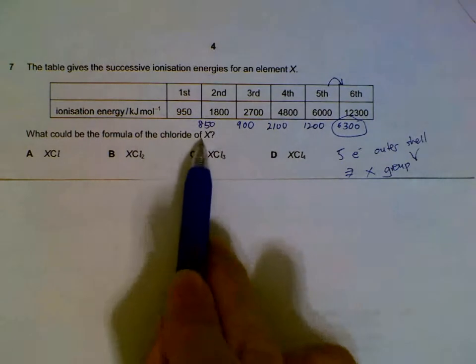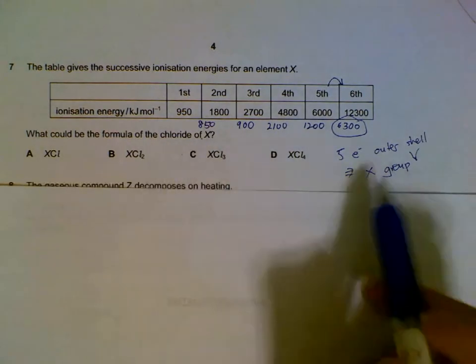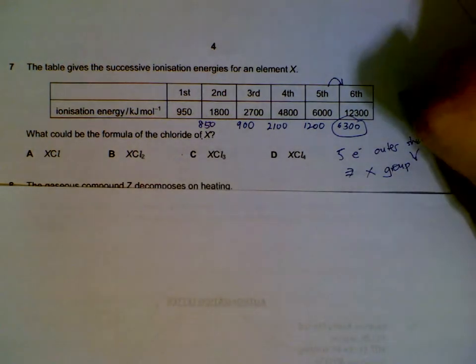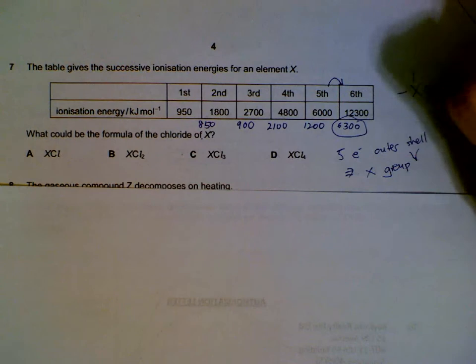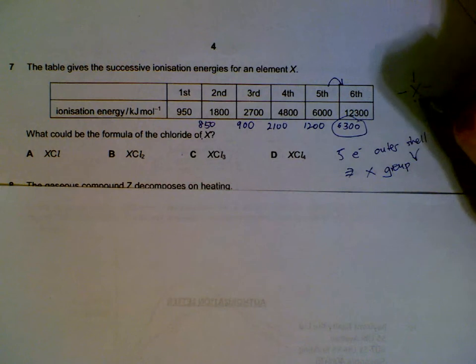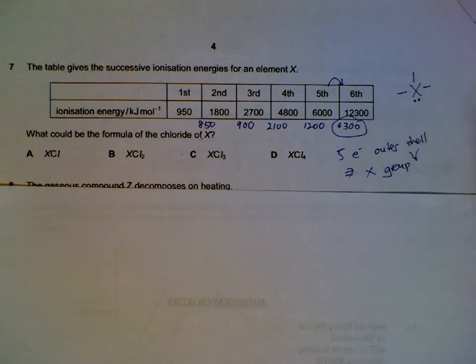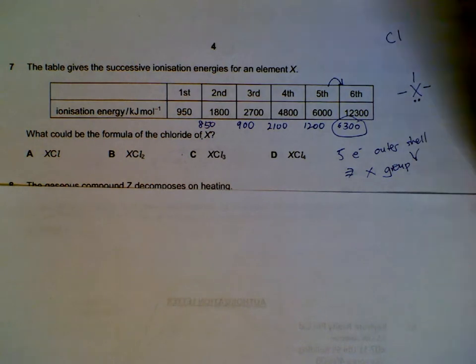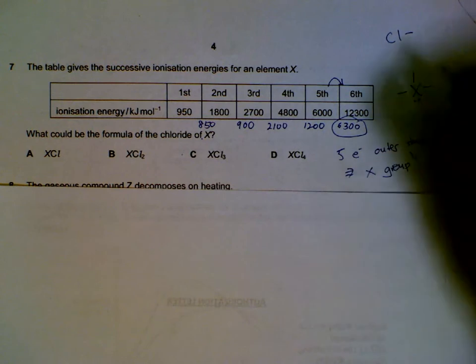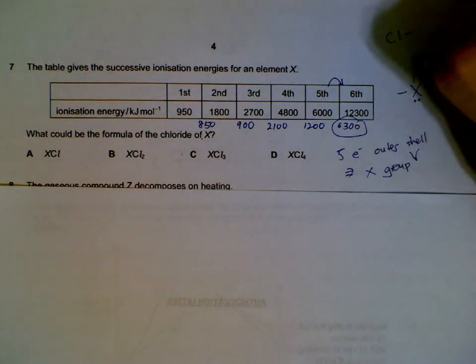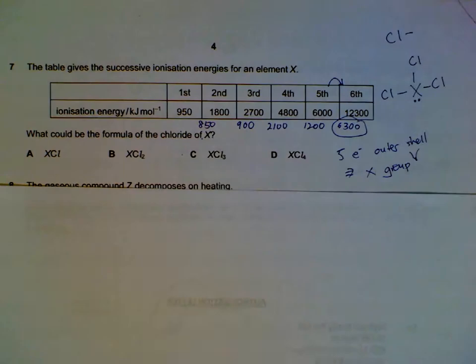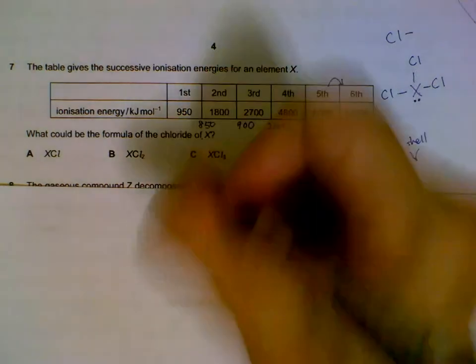So what is the formula between X and a chloride if it is in group 5? We will understand that it will actually usually need 3 more electrons, or to gain or share 3 more electrons with a chloride—so 1, 2, 3. There will be one lone pair. So chlorine has 7 electrons. You will need to only share 1. So if you piece them together and join all the arms, it will have Cl here, Cl here, and here. So XCl3.